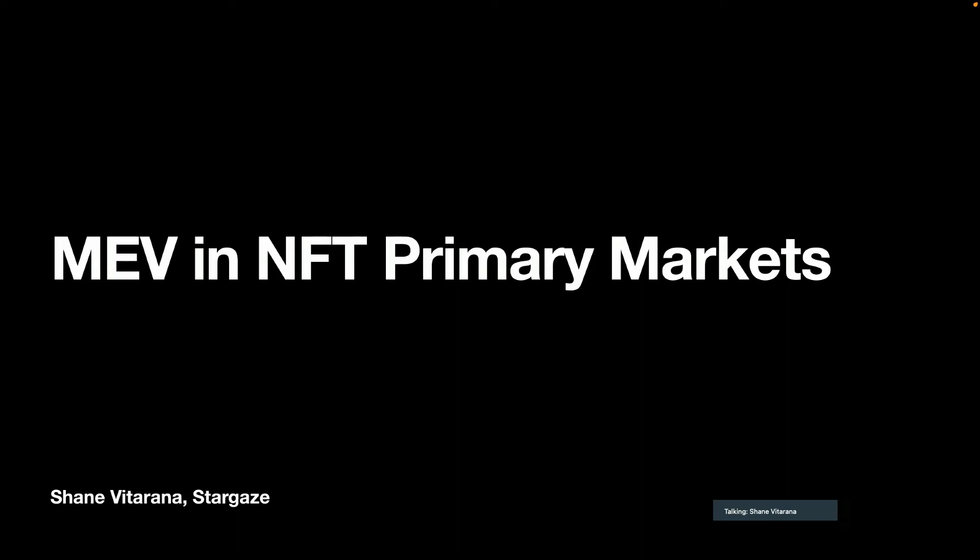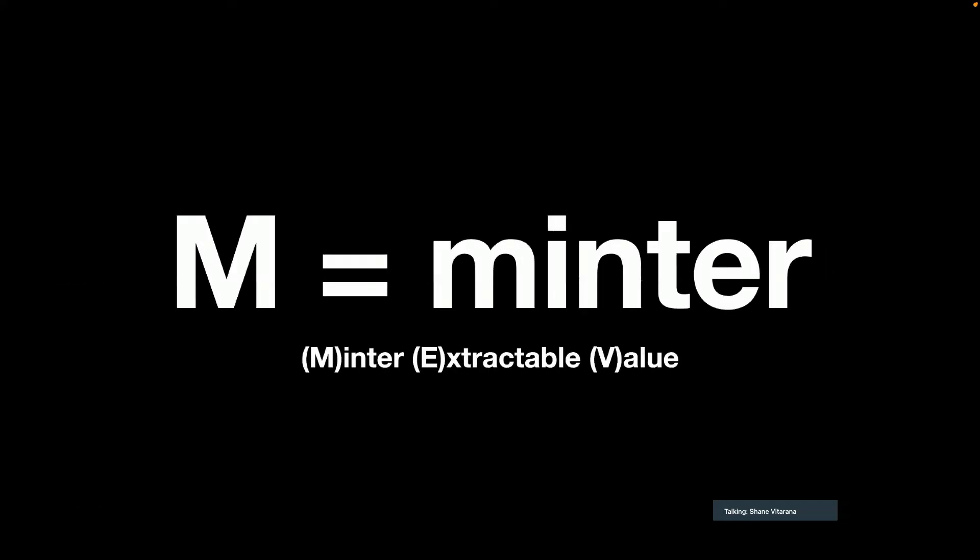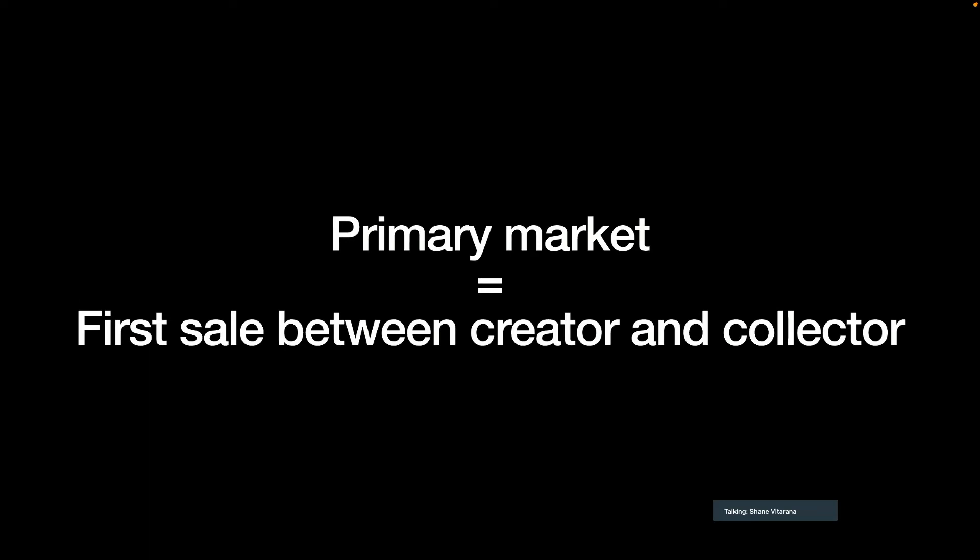So MEV in NFT primary markets. In this context, M stands for Minter — Minter Extractable Value. When I'm talking about a primary market, I'm talking about the first sale between the creator and the collector. This is not about the secondary market, like OpenSea where you have bids and asks. This is only about MEV in the very first sale.